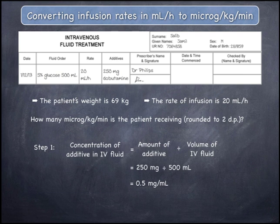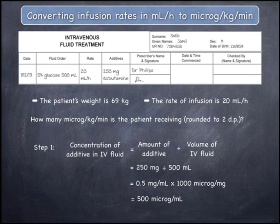This has been expressed in milligrams per mL and should be changed to micrograms per mL, because the final result we require is expressed in micrograms per kilogram per minute rather than milligrams per kilogram per minute. To do this, multiply by 1,000, giving a concentration of dobutamine in the IV fluid of 500 micrograms per mL. This means that every 1 mL of IV fluid contains 500 micrograms of dobutamine.